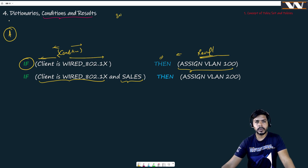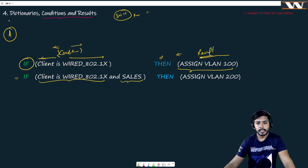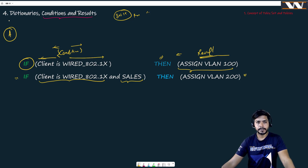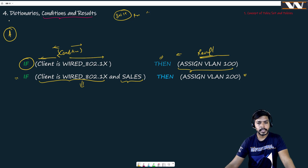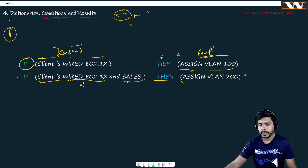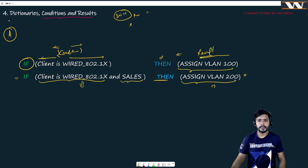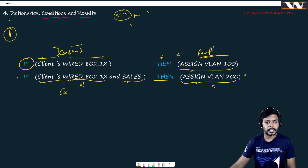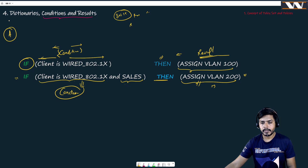When 802.1x authentication passes, I also need to check whether the user — say Rahul — is part of the sales group. If not, then this condition is not matched and VLAN 200 will not be assigned. But if the client is 802.1x and Rahul is part of sales, coming from the wired portion, then I can assign VLAN 200 to him. So inside the 'if' is my condition, and on the other side is my result.